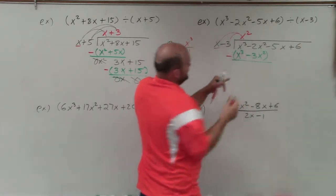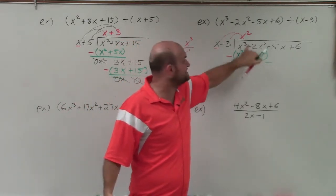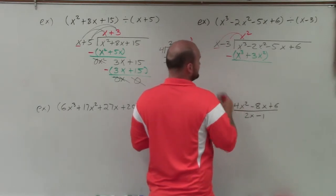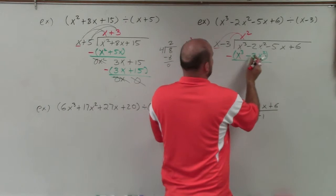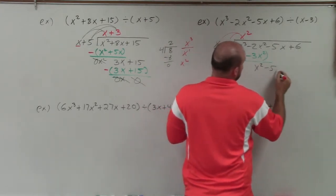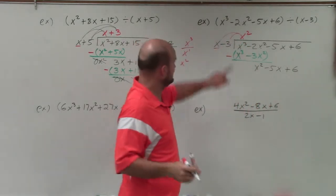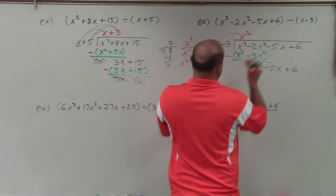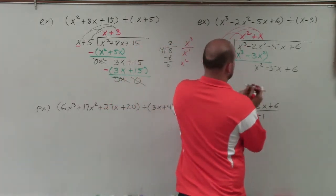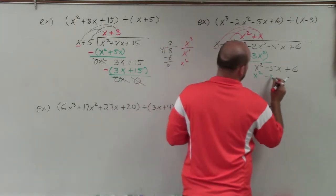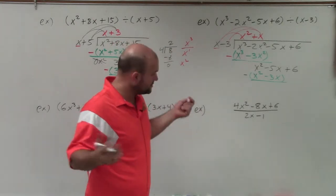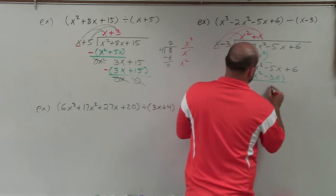The parentheses are so important here because a lot of students will just do negative 2x minus 3x, but it's actually negative 2x minus a negative 3x. Minus a negative is a double negative — that's the same thing as adding. So it's negative 2x plus 3x, which gives us x squared. Bring down the rest of the row. Then start the process again: x divides into x squared positive x times. Multiply x by both terms in the divisor: x times x is x squared, x times negative 3 gives negative 3x. Subtract the rows: x squared minus x squared is 0. Negative 5x minus a negative 3x gives negative 2x.